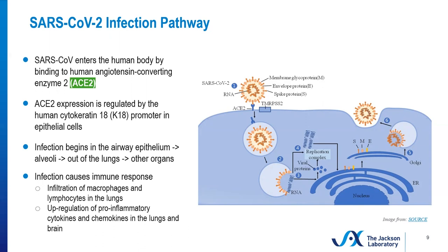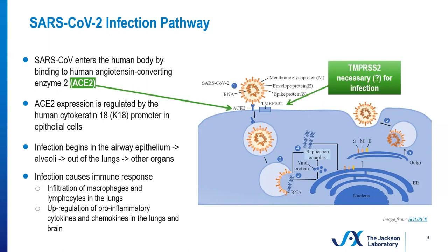Of course, the infection causes an immune response, which includes the infiltration of macrophages and lymphocytes into the lungs, and the upregulation of pro-inflammatory cytokines and chemokines into the lungs and brain. TMPRSS2 is another accessory protein that might be necessary for infection. It's involved in cleavage of the spike protein on the surface of the virus. However, increasing evidence has shown that the virus might be using other receptors to infect other cell types in an ACE2-independent manner.